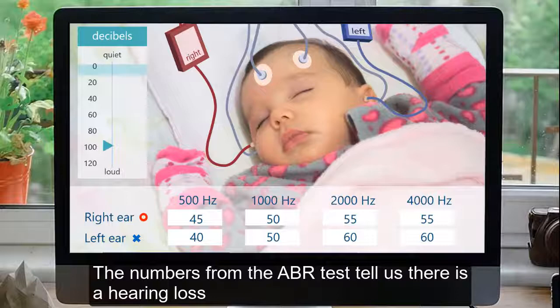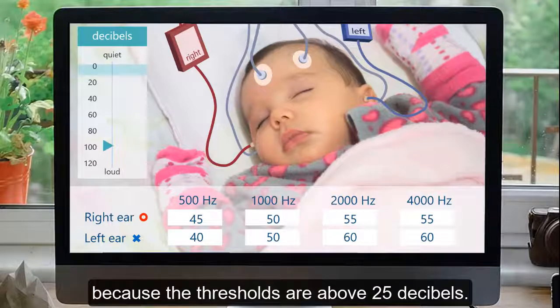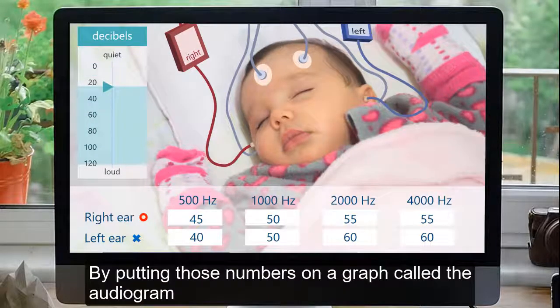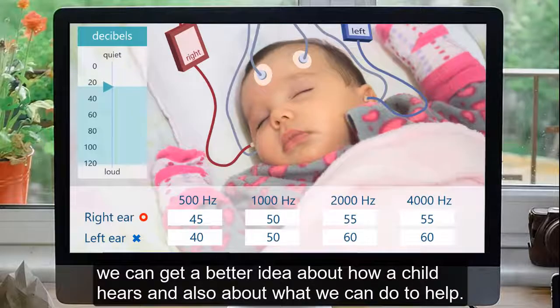The numbers from the ABR test tell us there is a hearing loss because the thresholds are above 25 decibels. But what do those numbers really mean? By putting those numbers on a graph called the audiogram, we can get a better idea about how a child hears and also about what we can do to help.